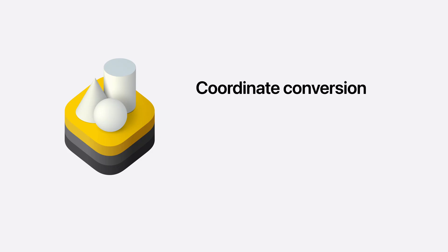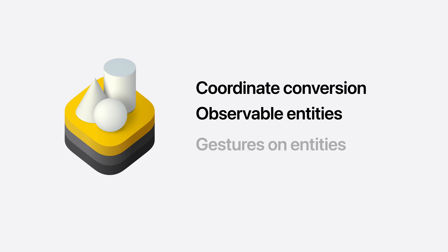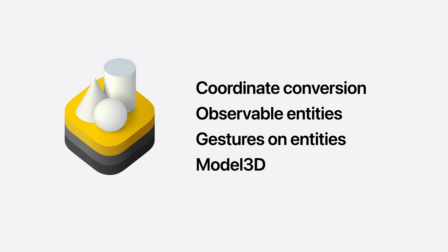A new suite of APIs deepens the integration between SwiftUI, RealityKit, and ARKit. It is easier to position and translate content across these three fundamental frameworks, regardless of the coordinate space you're working in. RealityKit's entity and its animations are observable, allowing them to be used directly in SwiftUI views. You can directly apply gestures to entities, or present and animate 3D content in your app with Model 3D.